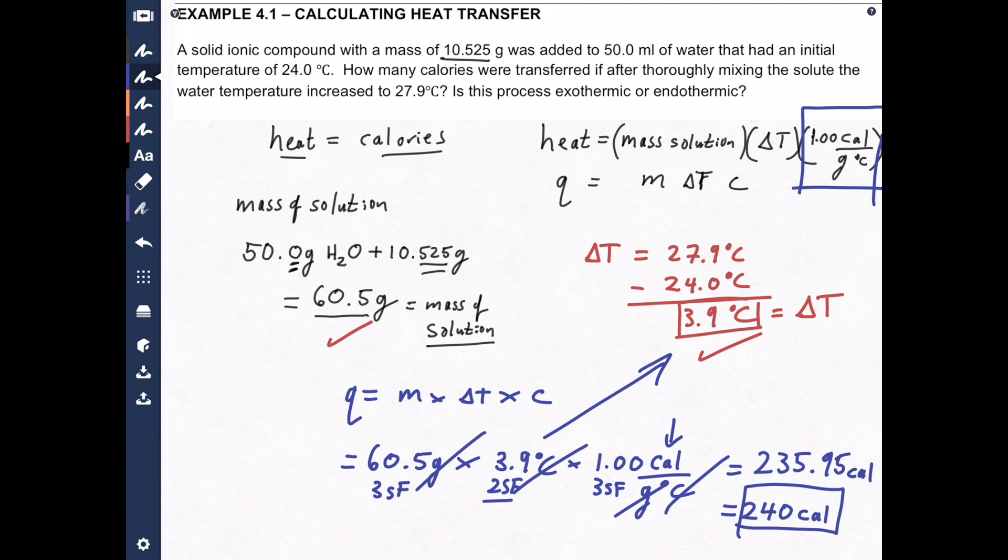There is one additional question that wants to know, is this process exothermic or endothermic? And that's a very easy question. You look at your initial temperature, which was 24.0. You look at your final temperature, which was 27.9. If the initial temperature is lower than the final temperature, the temperature got larger, it got higher as the reaction went on. That means the reaction gave up energy, it released energy to the environment. So that is an exothermic process.